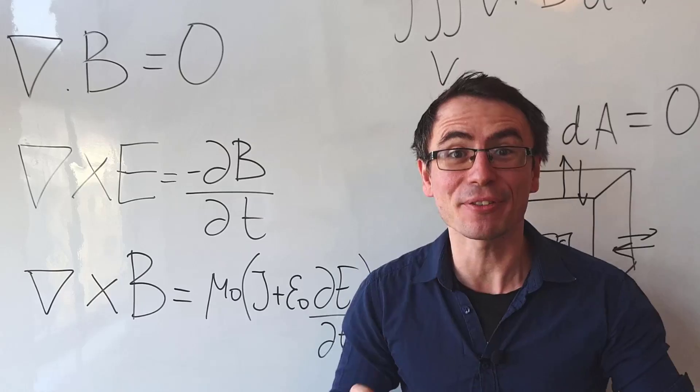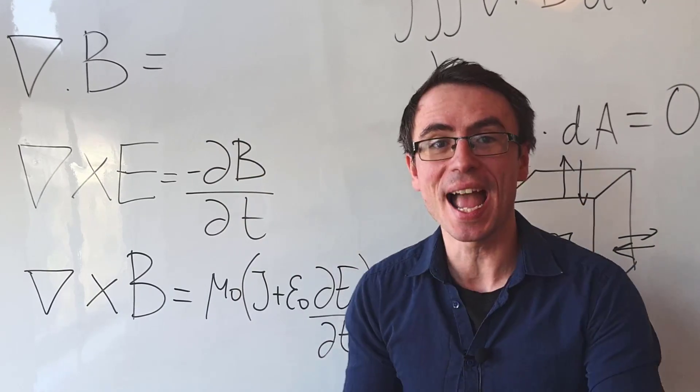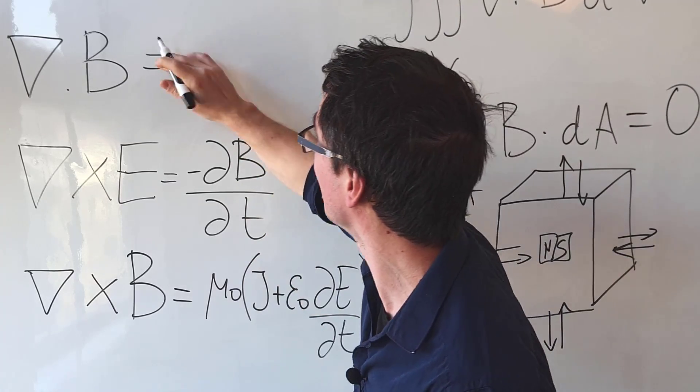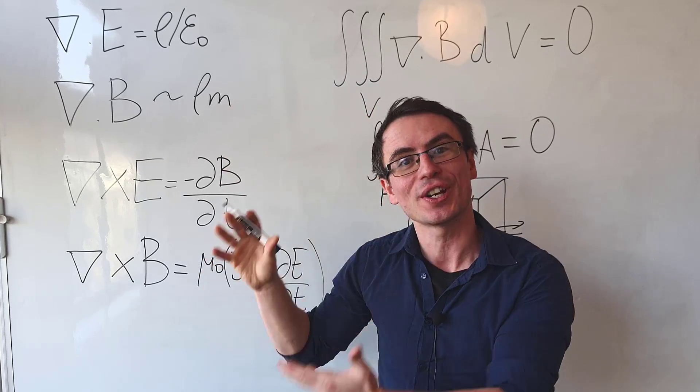If such a particle is ever found, then we would need to change this equation, and the divergence of B would be proportional to some magnetic charge density.